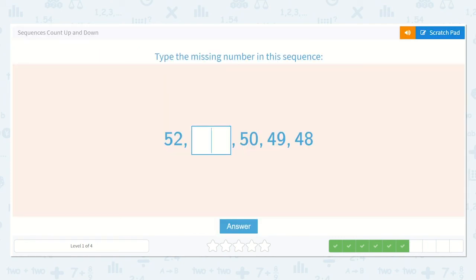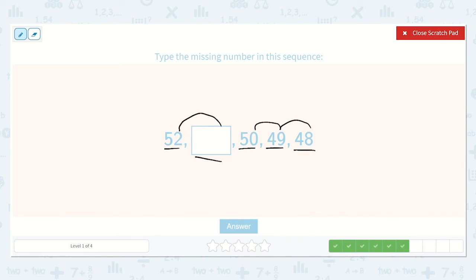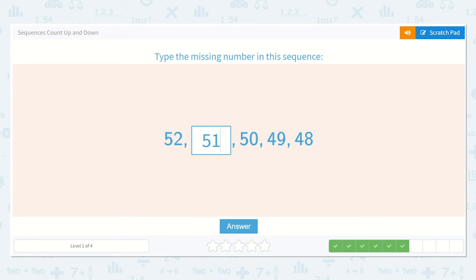Now they would like us to type the missing number in this sequence. So we have 52, then a number, then 50, 49, 48. So this is going down 1 every time. So here, if this goes down 1, we know our 10s place is going to stay the same. And our 1s place is going to go down by 1. What is 1 less than 2? Yeah, 1. So 52, 51, 50. Then we start our new 10. 49, 48. Good job. So 51 is our answer.